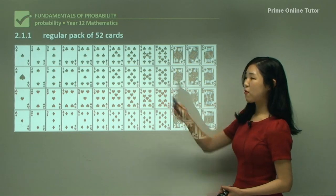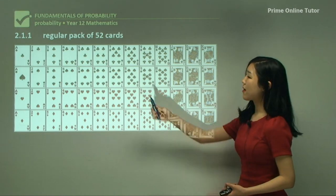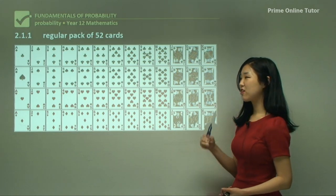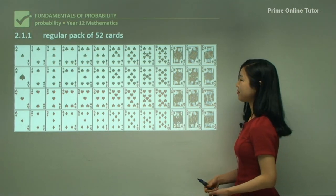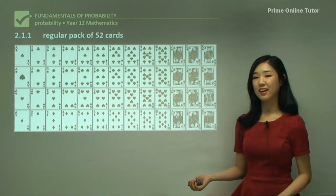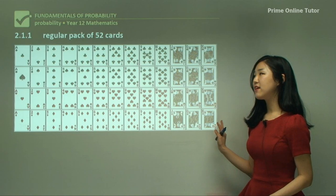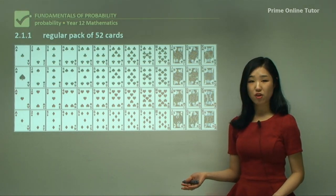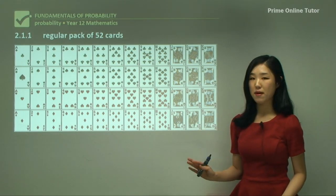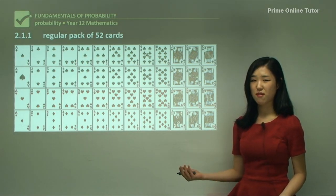We have four aces and there is no number one, so make sure you don't think there's a one in the cards. It always starts from two up to ten, and it's always four of each card. You can treat the Ace as being the number one. We also have court cards — court cards are Jack, Queen, and King, four of each as well. When looking at probability we don't consider any jokers, so don't worry about jokers in any probability questions unless they specifically state it, which is very rare.